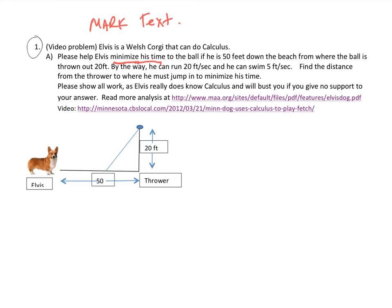So we want to minimize his time. And so the ball will be thrown out into the water. And then some other information that we are given is 50 feet down the beach from where the ball is thrown out 20 feet. And by the way, he can run 20 feet per second and swim 5 feet per second. Find the distance from the thrower to where he must jump in to minimize his time. So minimize the time is what we want to do. And find the distance is what we ultimately want to find.